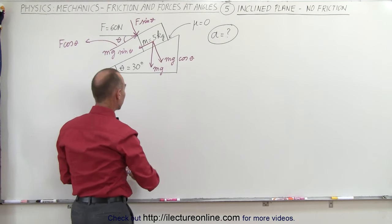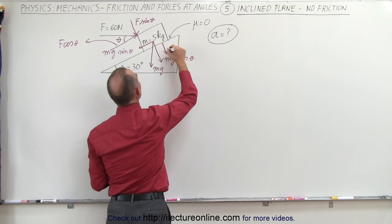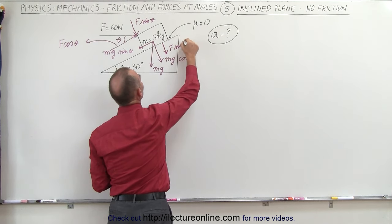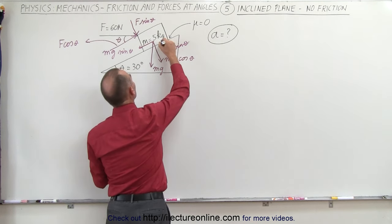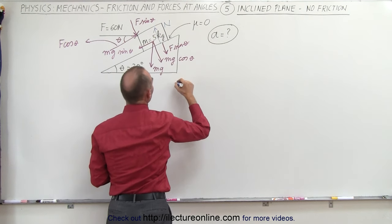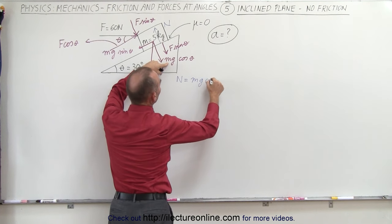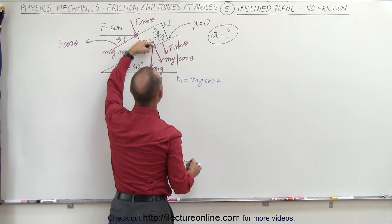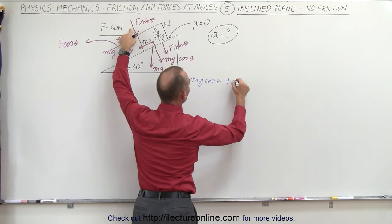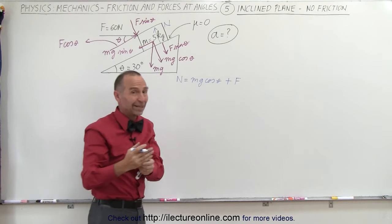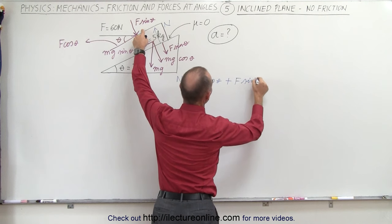We also have this component right here, which is F times the sine of theta, which causes a normal force to push back in this direction. So there is a normal force, and in this case the normal force equals the sum of mg cosine theta — caused by the perpendicular component of the weight — plus the perpendicular component of the applied force, which is F times the sine of theta.